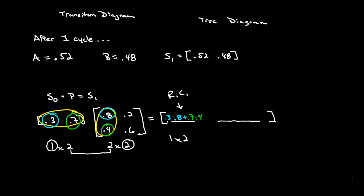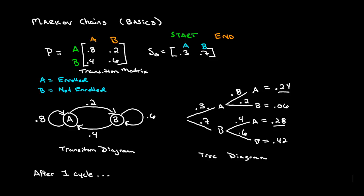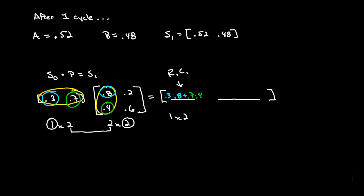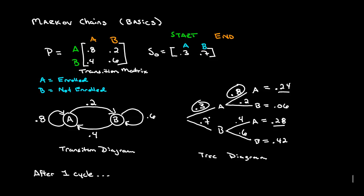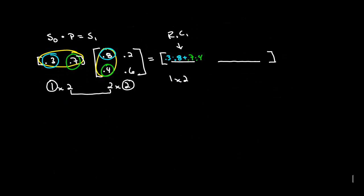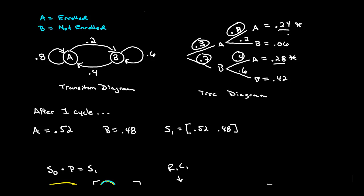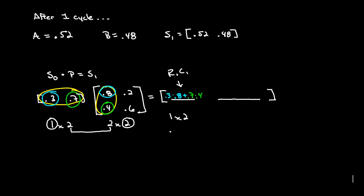Now what I want you to notice here, 0.3 times 0.8, here's 0.3 times 0.8. And 0.7 times 0.4 is right here. So what it says is add these two guys together. So this is just a different way of writing out the tree diagram up here. And so of course, we don't need this guy right here anymore. Of course this is equal to 0.24 plus 0.28 which is going to give us 0.52.